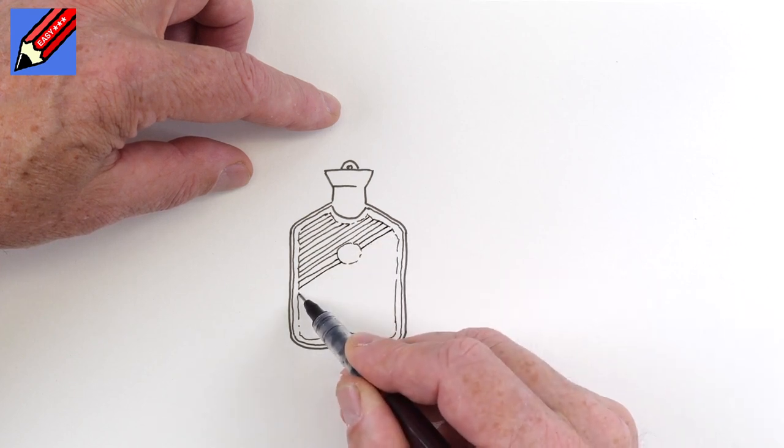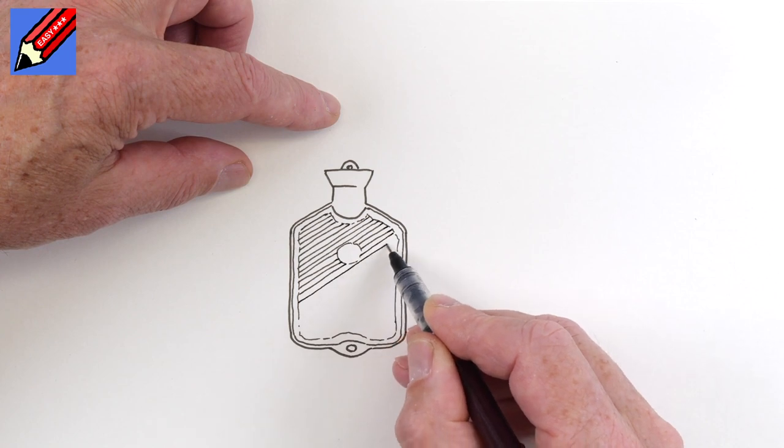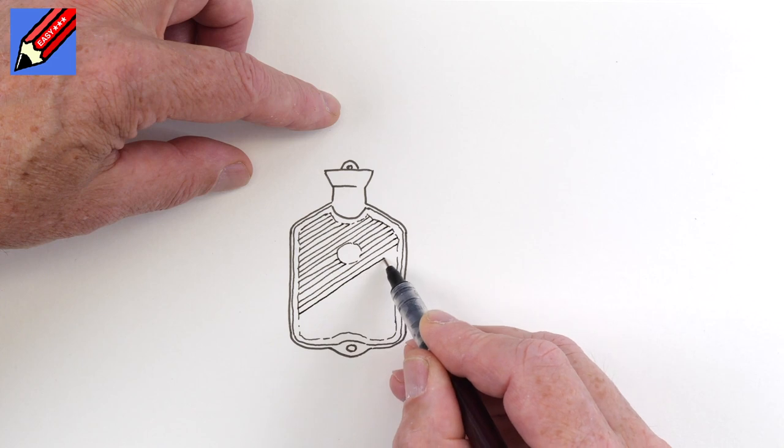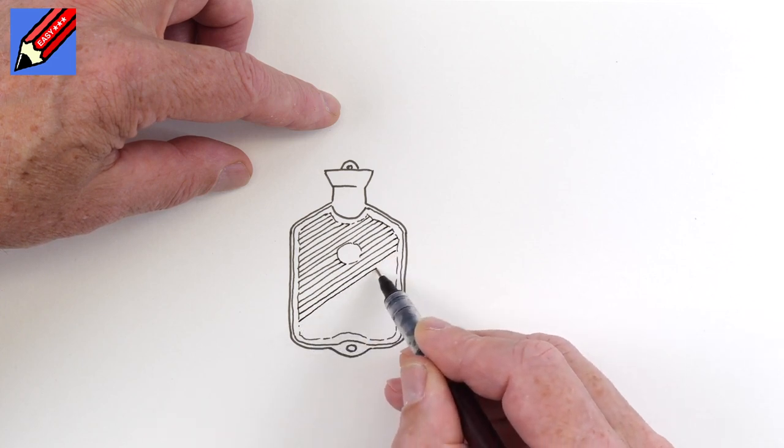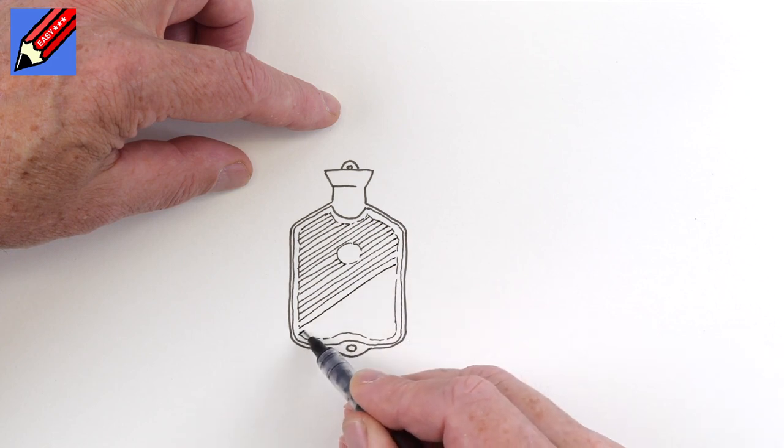It doesn't matter if you get not quite the same distance between these lines, but just try and do your best and don't do them too close. I know on a hot water bottle they're really quite close together. If you put them too close together on the drawing, it just makes it look really dark and messy.